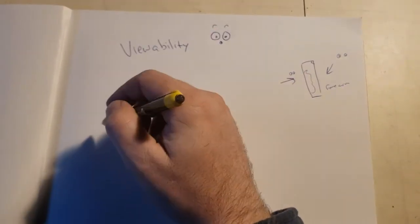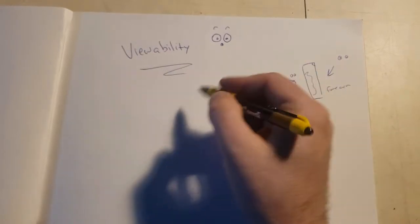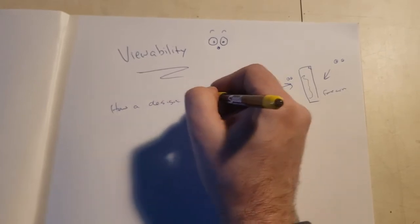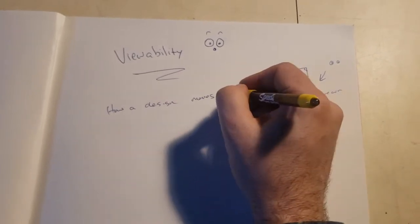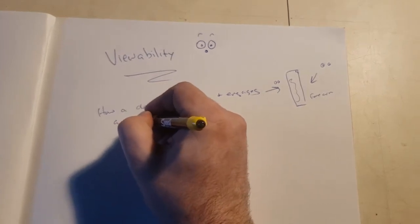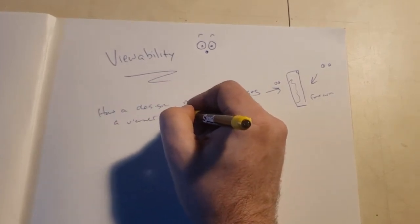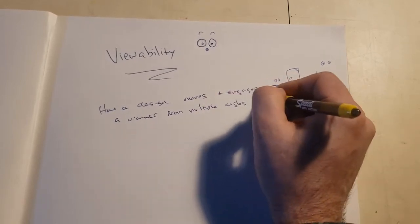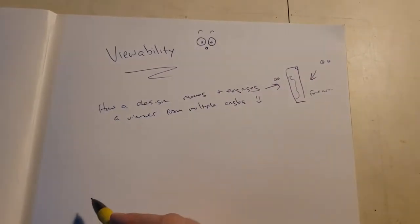But at the same time, if we're going to be going into larger scale design, viewability can be described as how a design moves and engages a viewer from multiple angles. So what do we mean by this?